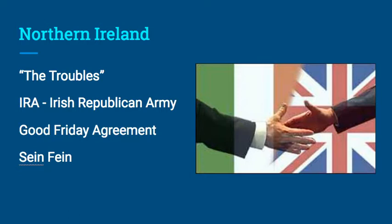Nearly 4,000 people died in the conflict. It ended officially with the Good Friday Agreement of 1998, which allowed for the reestablishment of the Northern Ireland Assembly. Now Northern Ireland has some aspects of self-rule, similar to Scotland and Wales. Former members of the IRA run for political office under the banner of Sinn Féin. This illustrates how the UK is a unitary system but has devolved powers to some of its regional member governments — a theme that comes up on the exam.